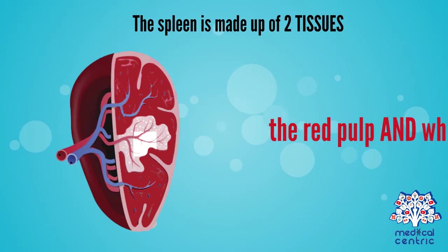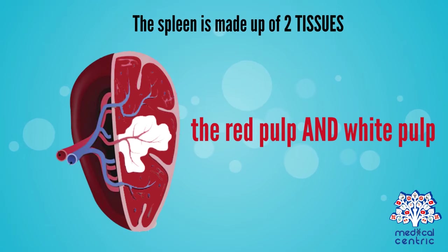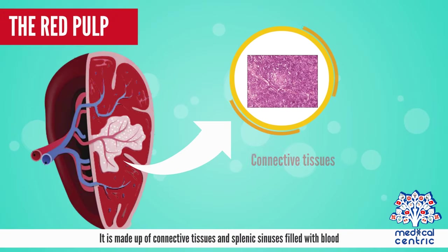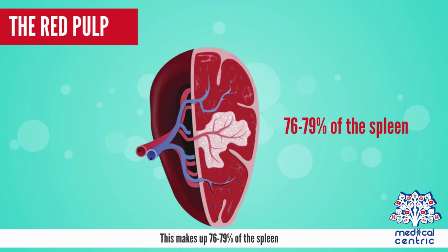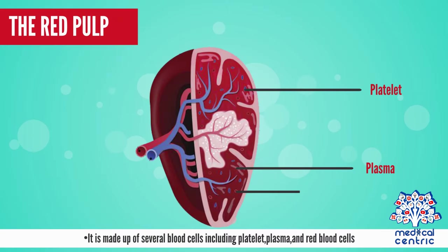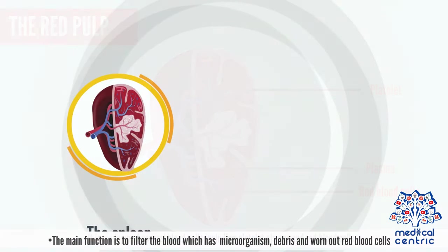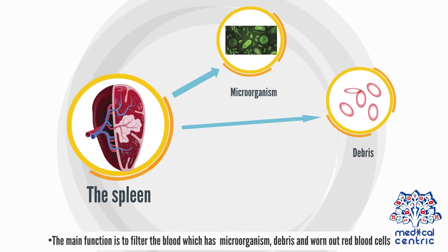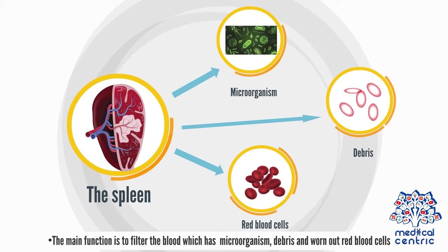The spleen is made up of two tissues: the red pulp and white pulp. The red pulp is made up of connective tissues and splenic sinuses filled with blood, making up 76 to 79 percent of the spleen. It is made up of several blood cells, including platelets, plasma, and red blood cells. Its main function is to filter the blood of microorganisms, debris, and worn-out red blood cells.